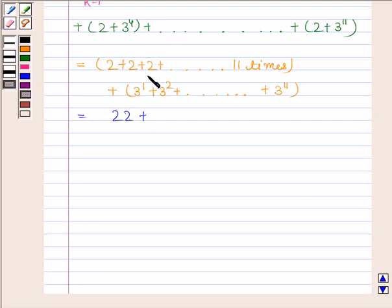Now, we will find the sum of GP series. We know that sum of N terms of GP, that is S_N, is equal to A into R to the power N minus 1 upon R minus 1 if R is greater than 1.